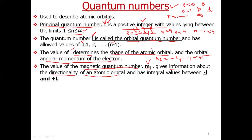For example, suppose l is 3. Then ml can be −3, −2, −1, 0, 1, 2, and 3 — it can have 7 values. When l equals 1, ml can have values −1, 0, +1 — 3 values. Since l = 1 denotes p orbitals, it has 3 orientations, giving us 3 p orbitals.